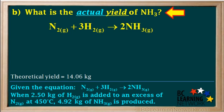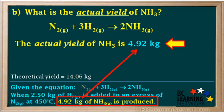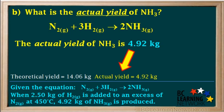Part B asks us to find the actual yield of ammonia. The question tells us that 4.92 kilograms of ammonia is actually produced in this reaction. Therefore, we can state that the actual yield of ammonia is 4.92 kilograms, and we'll note that down.